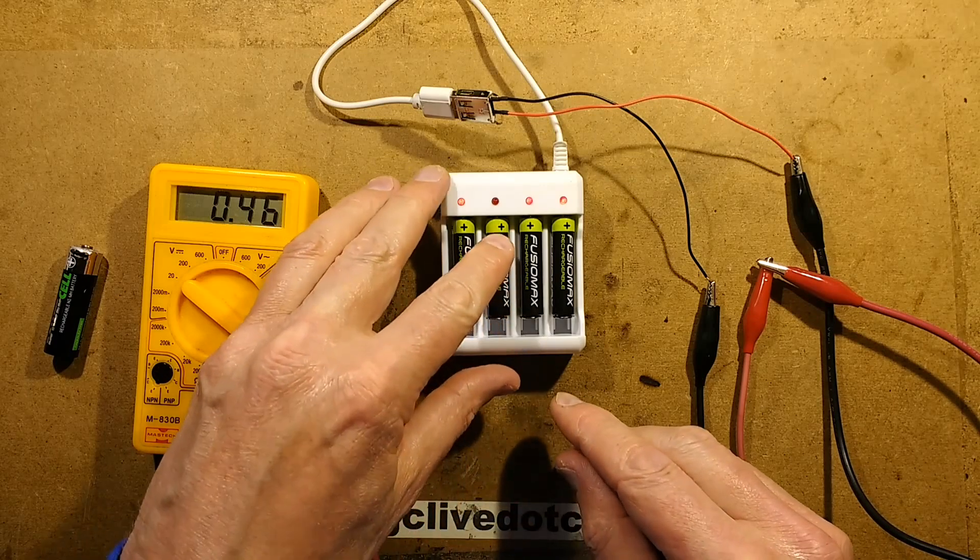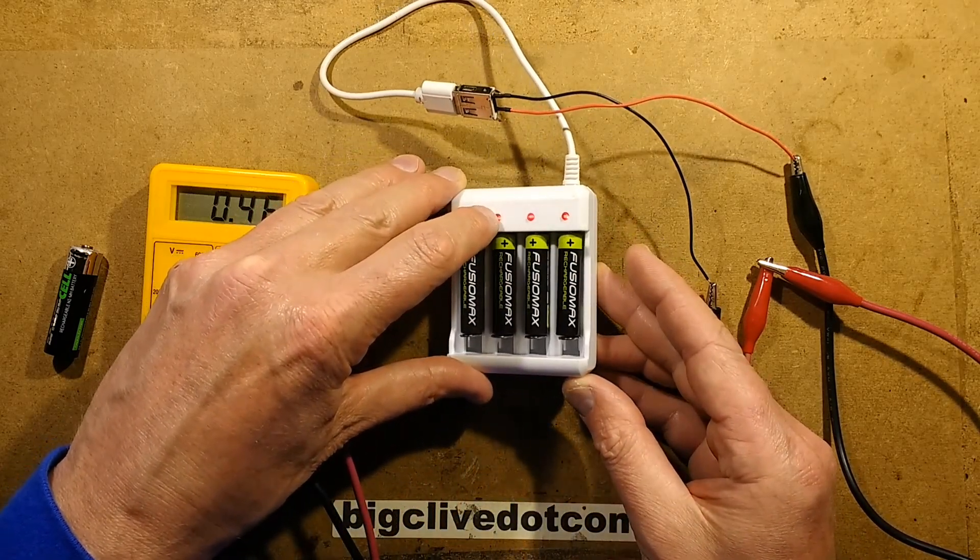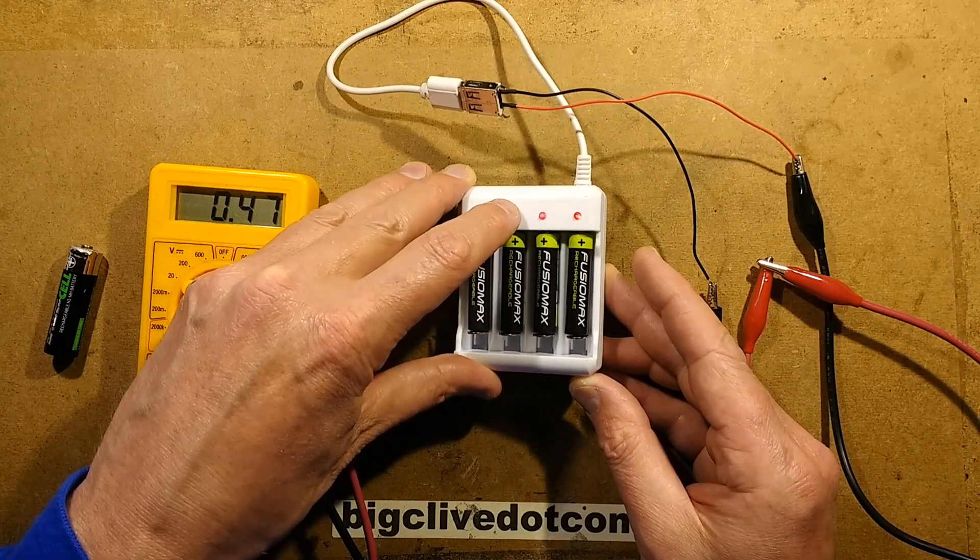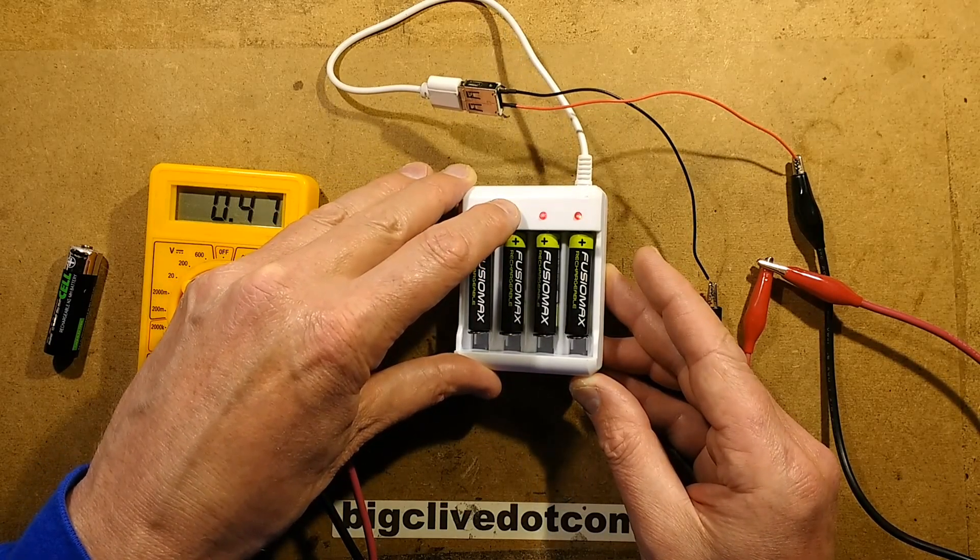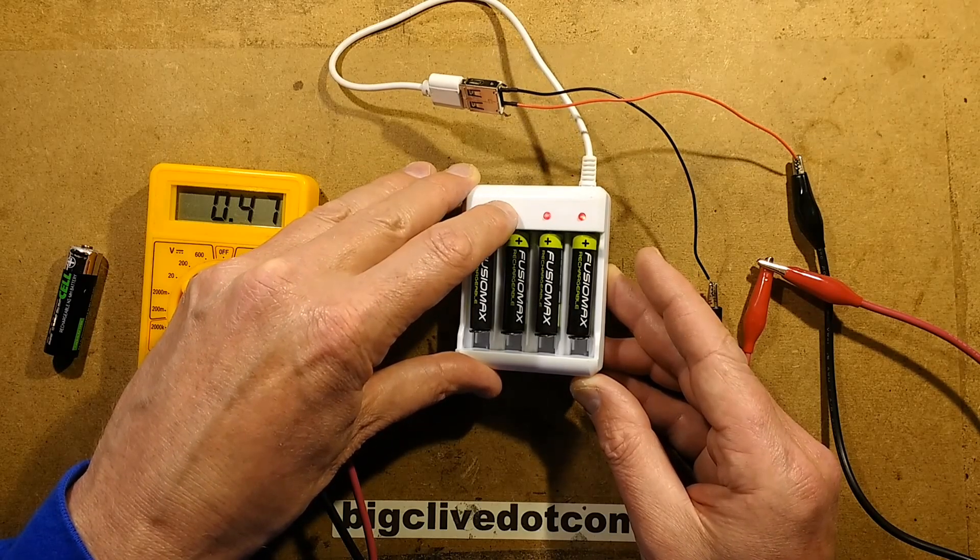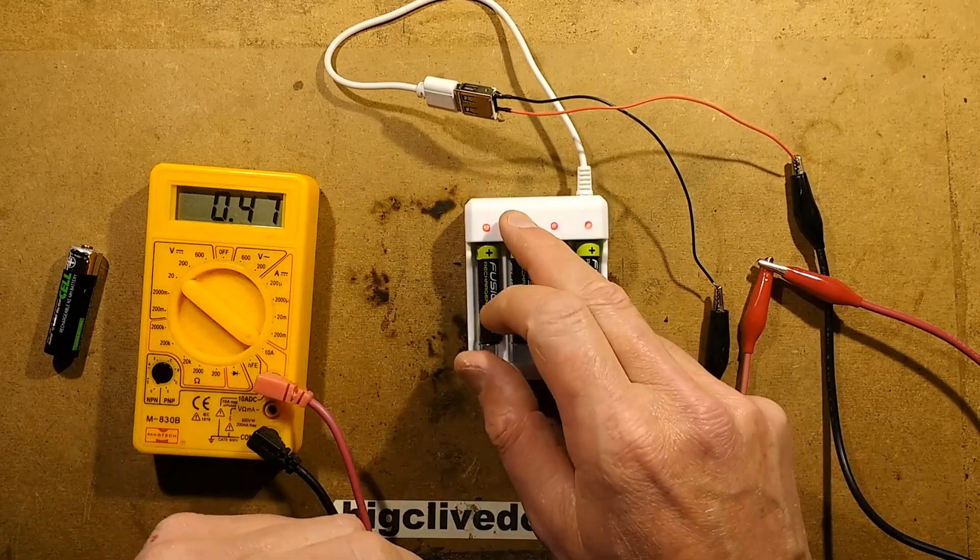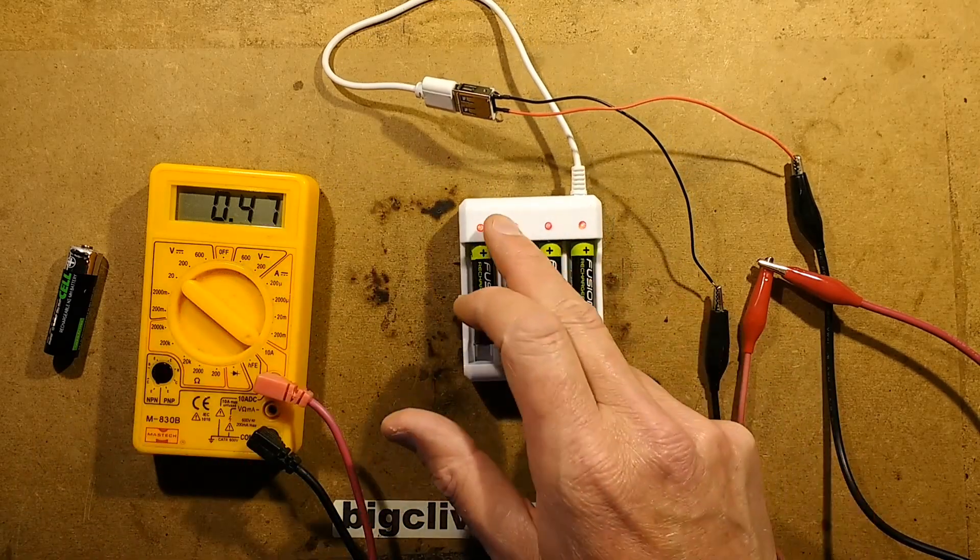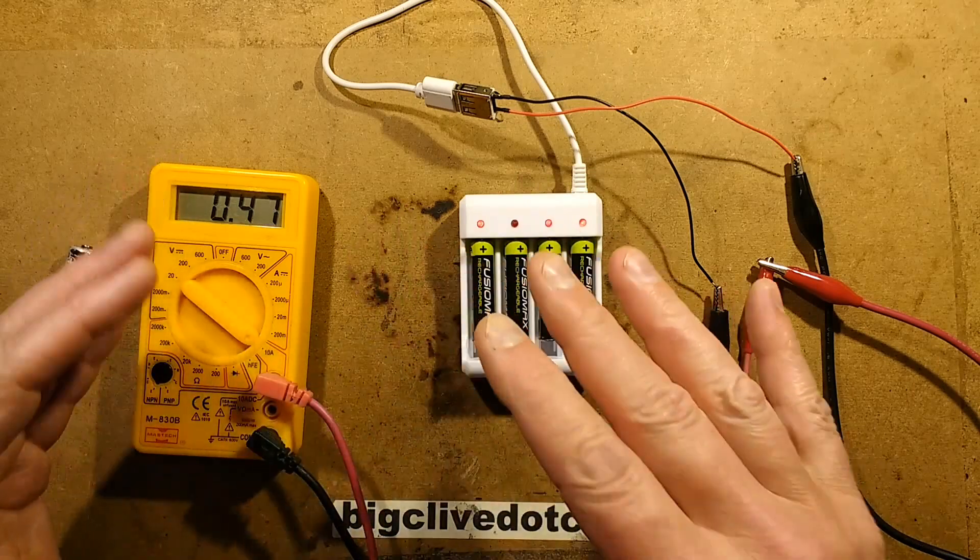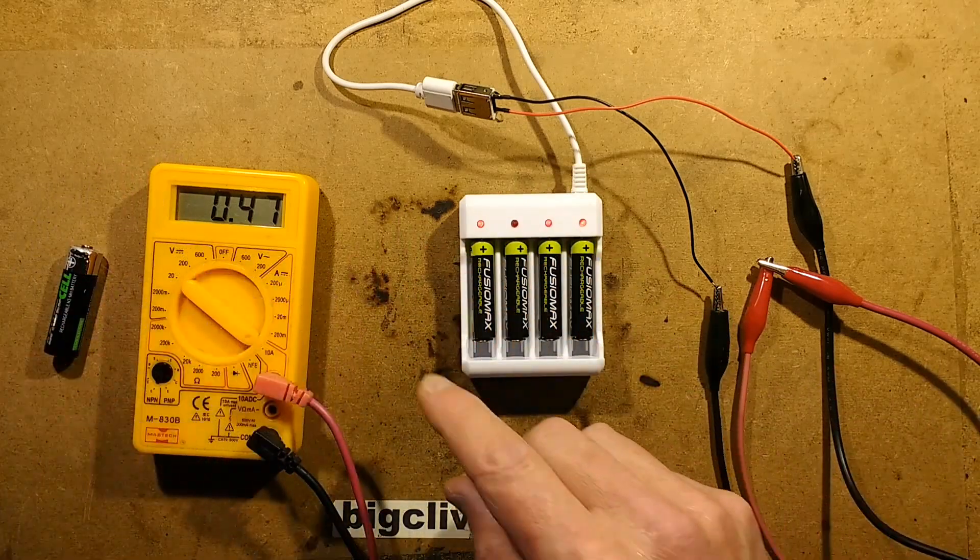460 milliamps for four cells. And if you wiggle this LED here, yep, if you wiggle it backwards and forwards it goes on and off. When it's off the current consumption is about 475 milliamps and when it's on it goes up to about 482. So the LED is about 5 or so milliamps when it's connected. We can tell that from just looking at the way the current fluctuates.